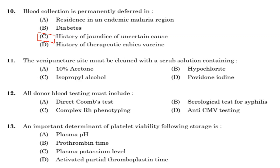Eleventh question: the venipuncture site must be cleaned with a scrub solution containing. Option A: 10% acetone. Option B: hypochlorite. Option C: isopropyl alcohol. Option D: povidone iodine. Answer is Option D, povidone iodine.